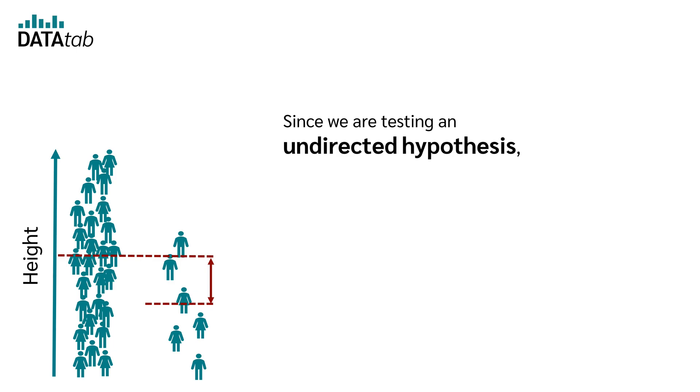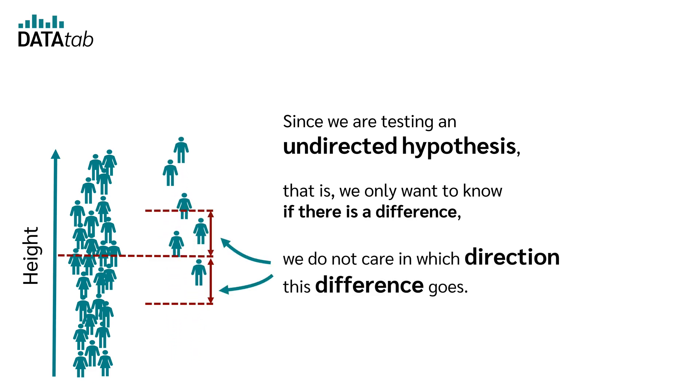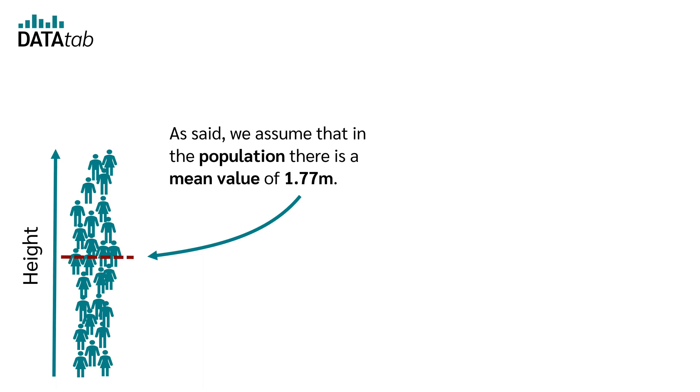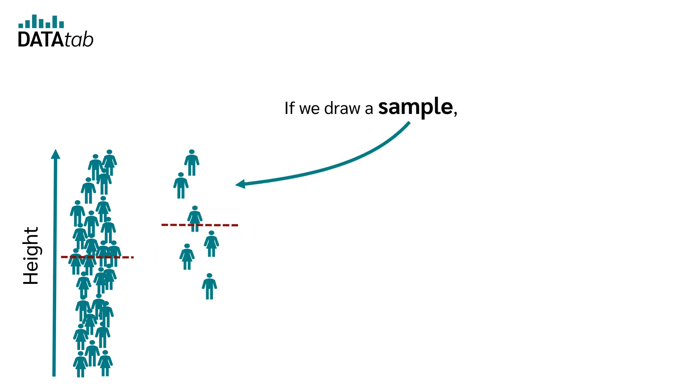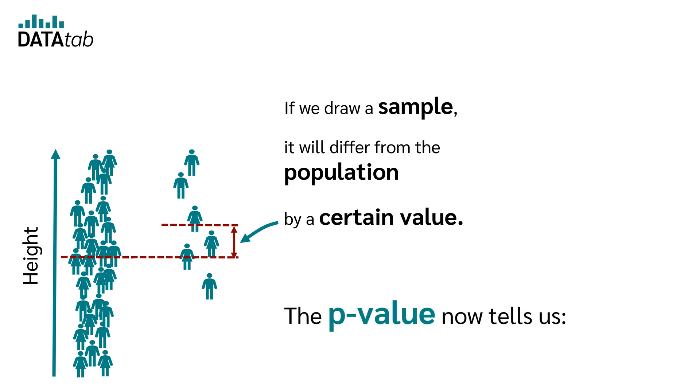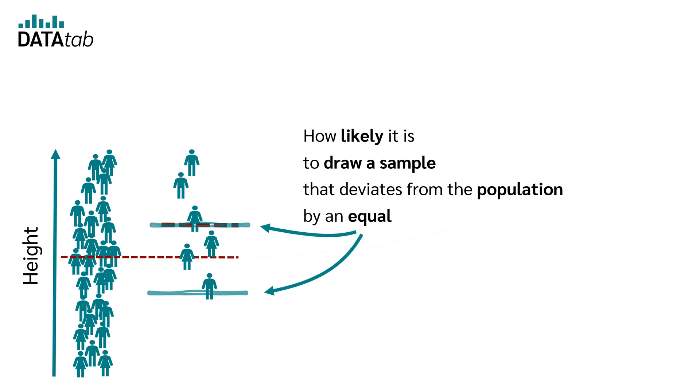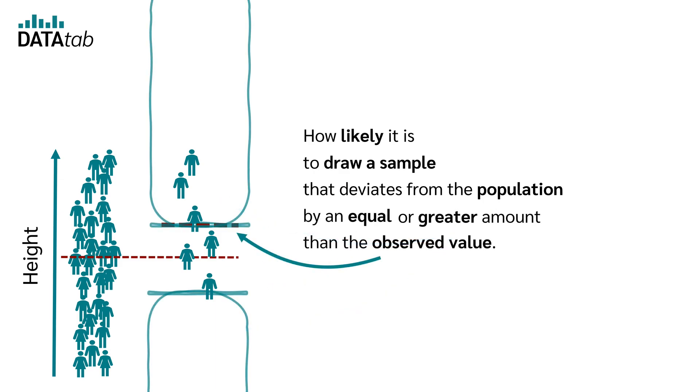Since we are testing an undirected hypothesis, that is, we only want to know if there is a difference, we do not care in which direction the difference goes. So now we come to the p-value. As said, we assume that in the population there is a mean value of 1.77. If we draw a sample, it will differ from the population by a certain value. The p-value now tells us how likely it is to draw a sample that deviates from the population by an equal or greater amount than the observed value.